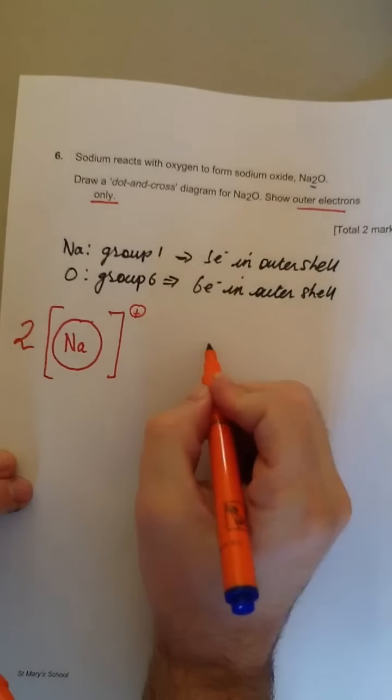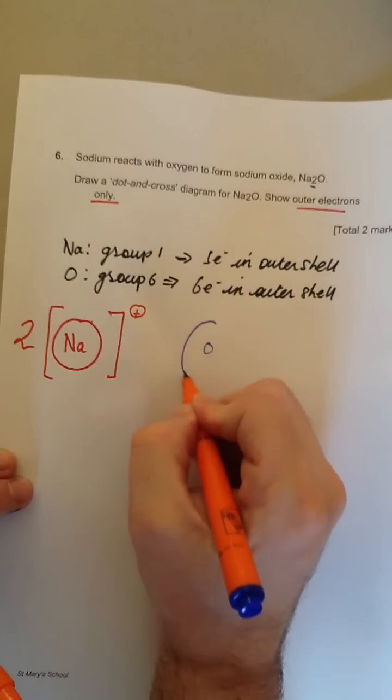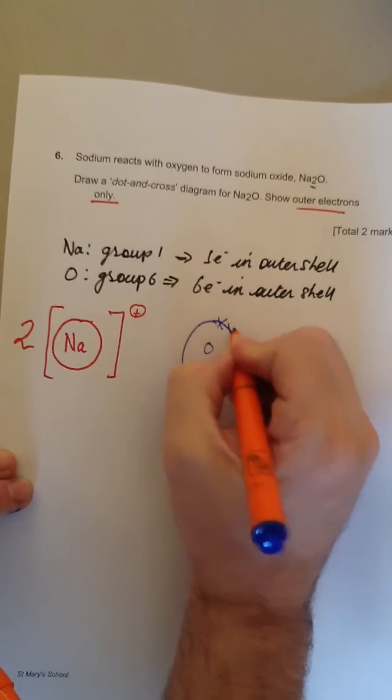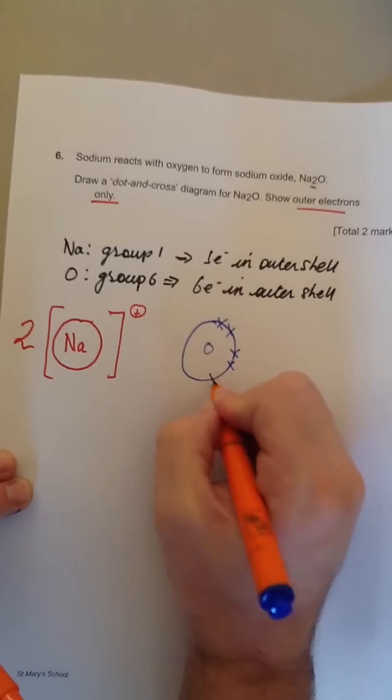Look at the oxygen here. I'll put O to show we know it's oxygen. Now it had six electrons in its outer shell: one, two, three, four, five, six.